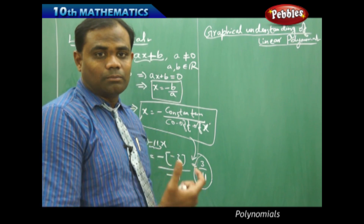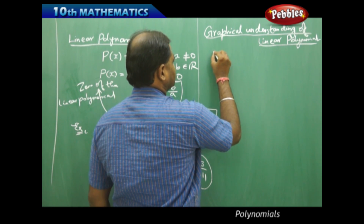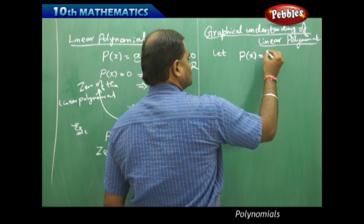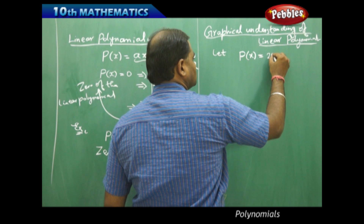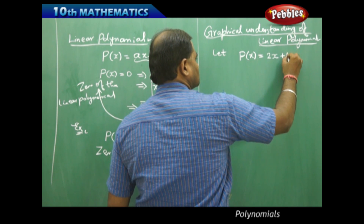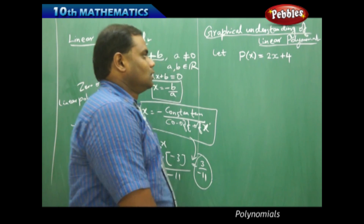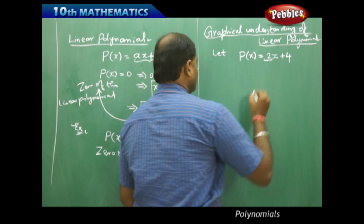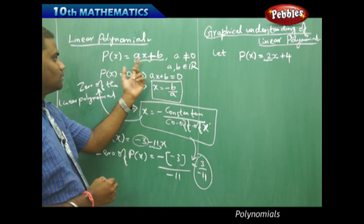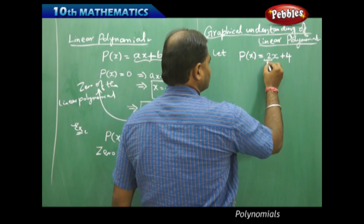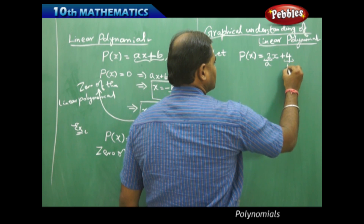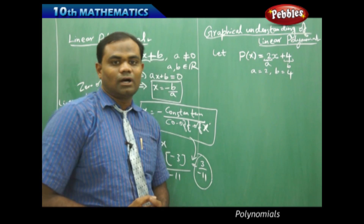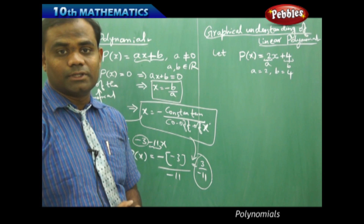Let me randomly take a linear polynomial example. Let P of x equal to 2x plus 4. This is a linear polynomial where, comparing with the general form, my A is 2 and B is 4. That is how I identify this linear polynomial with A and B respectively.